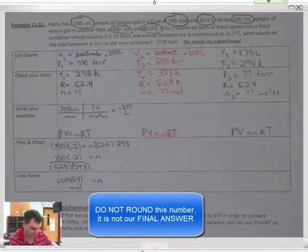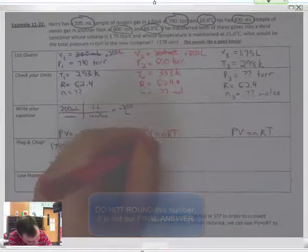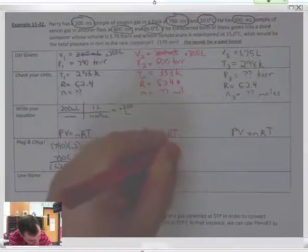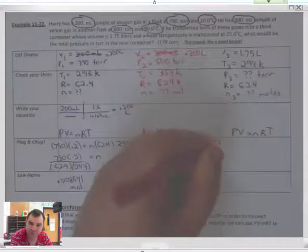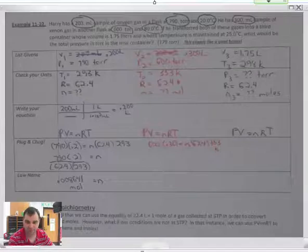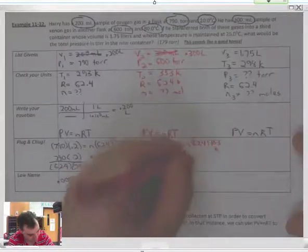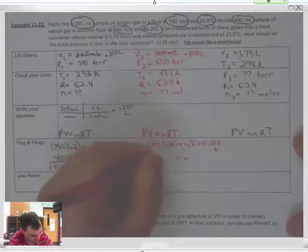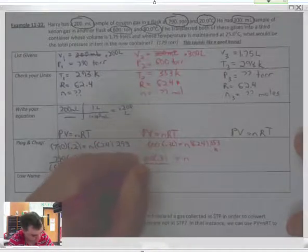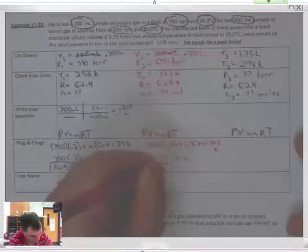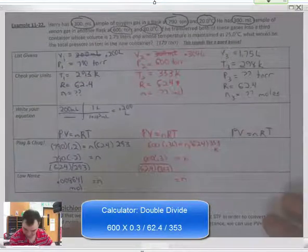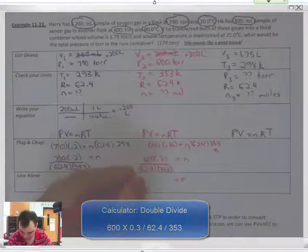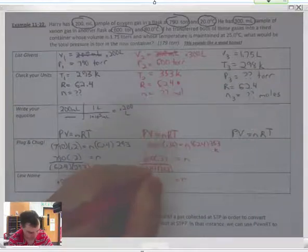Now we are going to do PV equals NRT again here. 600 torr times 0.3 liters equals N 62.4 353 Kelvin. N is equal to 600 times 0.3 divided by 62.4 divided by 353. So, we get N is equal to 0.0081717 moles.